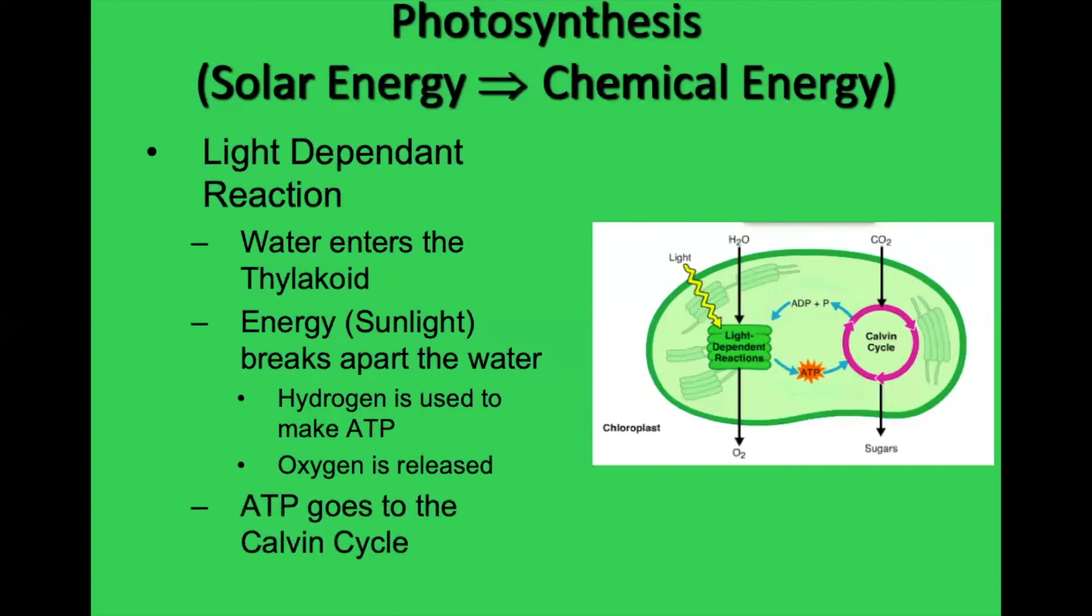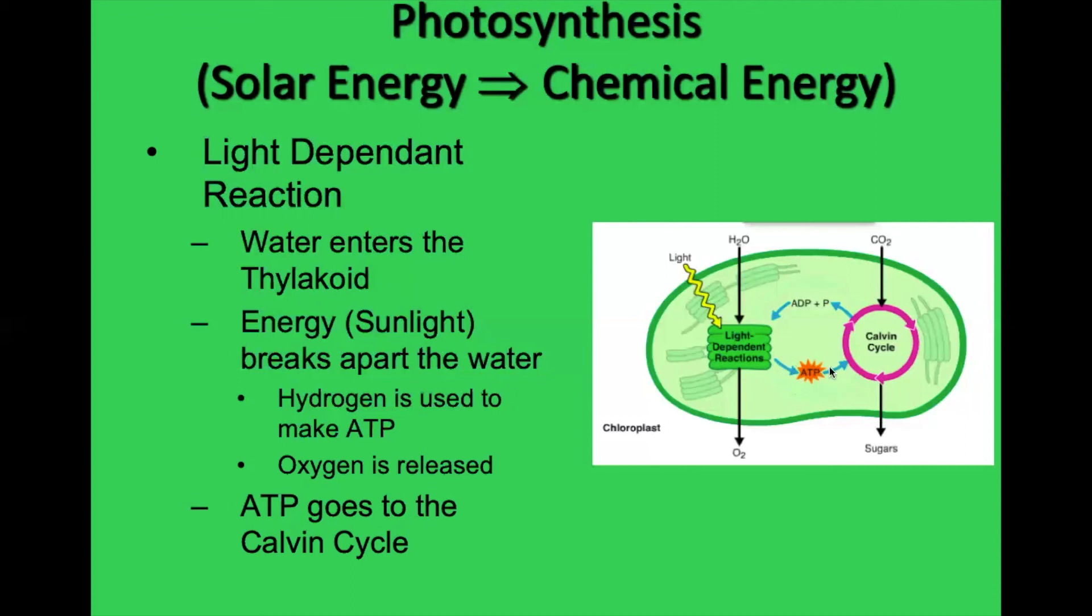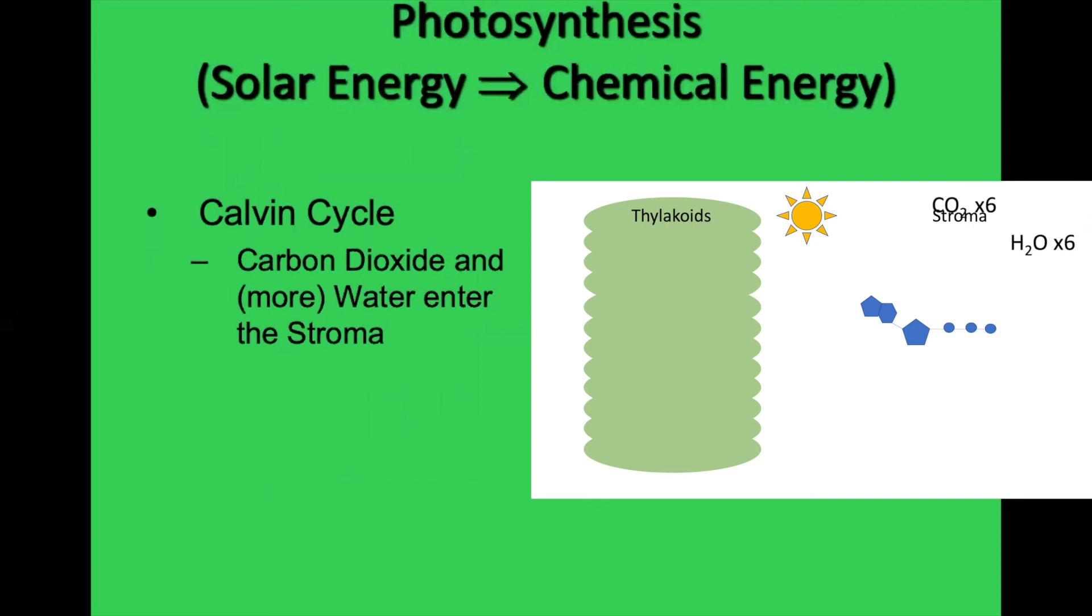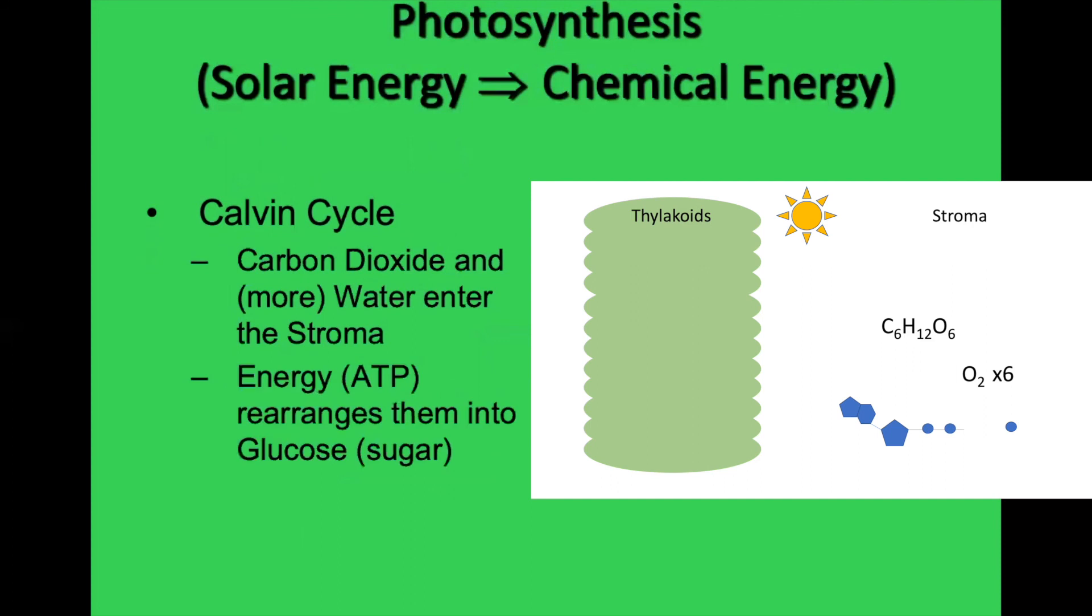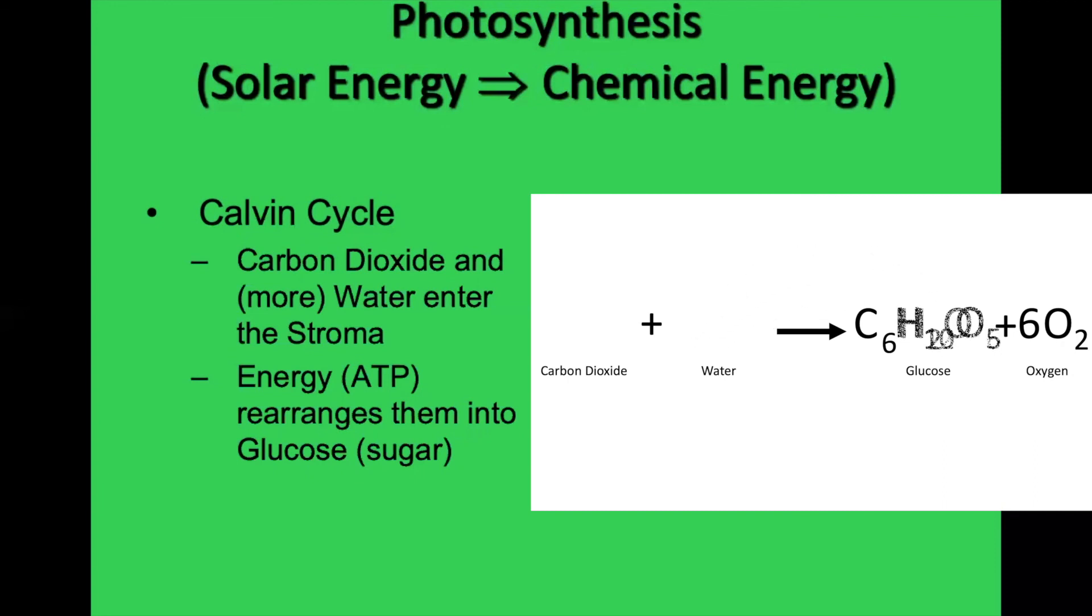That ATP that we need is going to go into a huge series of chemical reactions. And this ATP is going to be charging those chemical reactions. Within the Calvin cycle, what all those individual chemical reactions add up to is carbon dioxide from the plant breathing and more water from the plant drinking go into the stroma. And that ATP is going to make them rearrange. That's the chemical reaction we talked about in the beginning, where carbon dioxide mixes with water. And this ATP energy is going to go into them to make what that equation said, to make glucose.